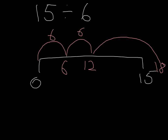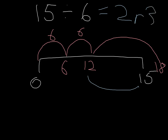So we now count how many groups of 6 we have: 1, 2 groups of 6. Then we look at how many remainders we have. From 12 up to 15 is remainder 3.